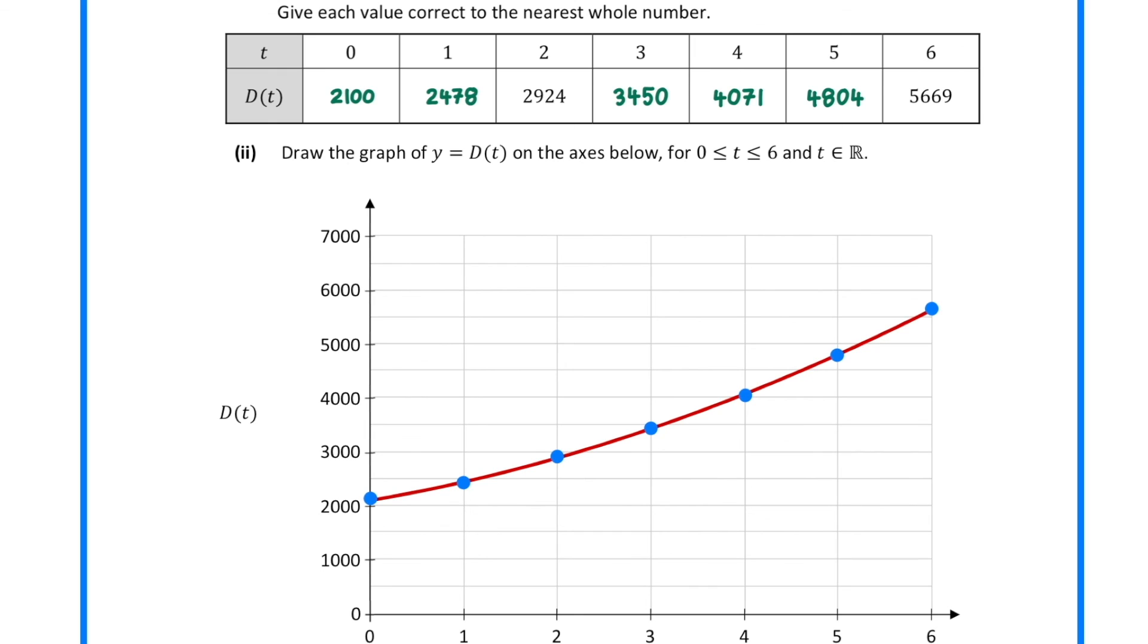In part 2, we need to graph these points. We do this by plotting a point for each of our pairs, and then joining the dots as best we can with a smooth curve.